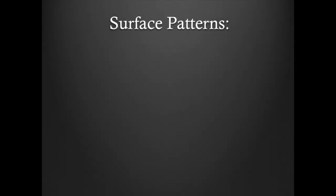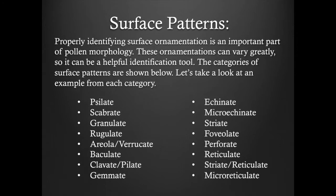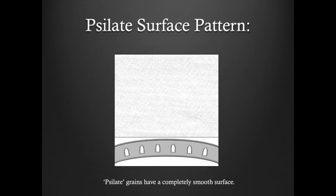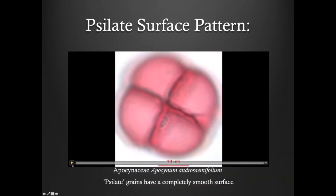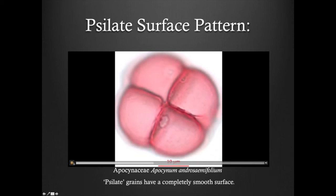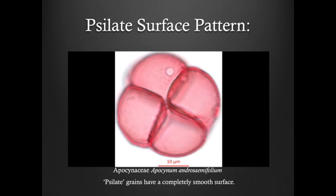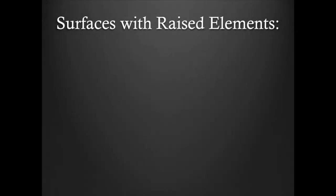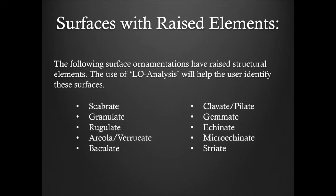Now let's talk about the various types of surface patterns. These ornamentations can vary greatly, so they can be a helpful identification tool. The categories of surface patterns are shown below. Let's take a look at an example for each category. Psilate grains have a completely smooth surface. Now the following surface ornamentations have raised structural elements.